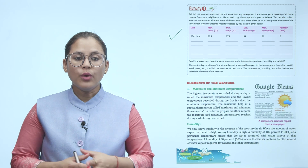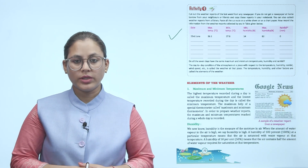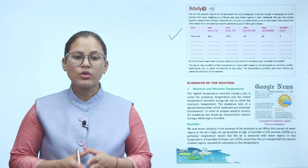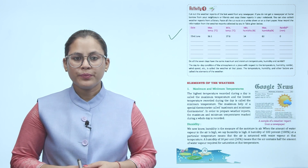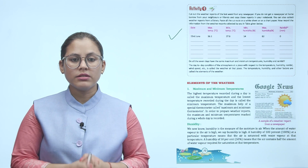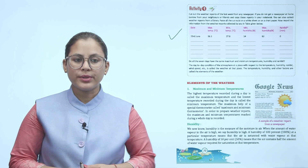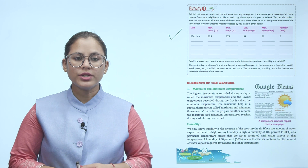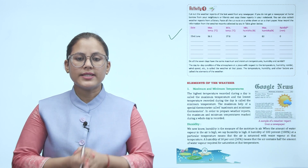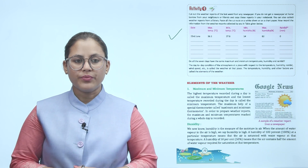Humidity is a measure of the moisture in the air. When the amount of water vapour in the air is high, we say humidity is high. A humidity of 100% at a particular temperature means that the air is saturated with water vapour at that temperature. A humidity of 50% means that the air contains half the amount of water vapour required for saturation at that temperature.